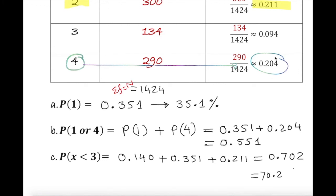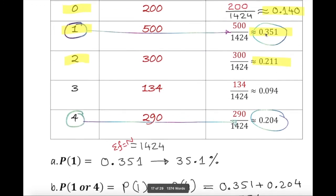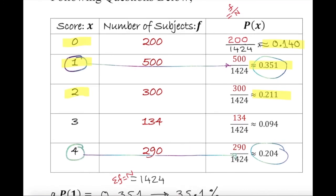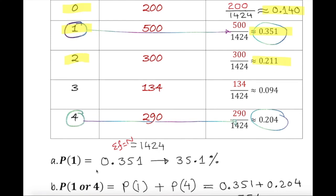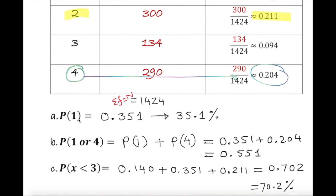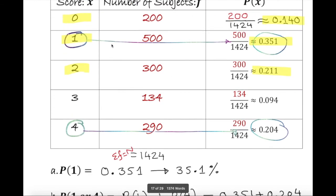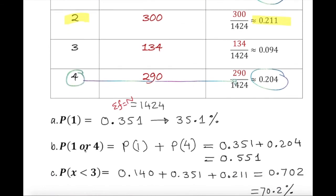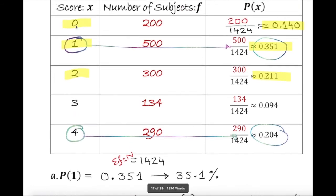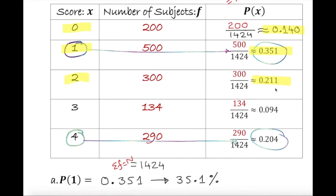So to summarize: first we found the probabilities by dividing each frequency by the total. Once we built the probability distribution table, we could answer the questions easily. Probability of exactly 1 is 0.351. Probability of 1 or 4 uses the addition rule for independent events. And for X less than 3, we add the probabilities for 0, 1, and 2. That's how you find the probability distribution and the corresponding answers.